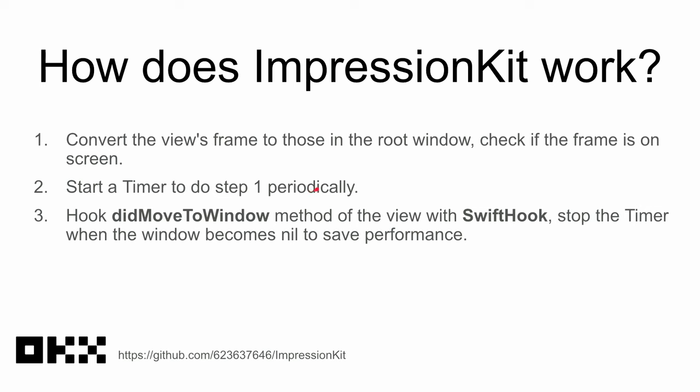How does ImpressionKit work? First, we convert the view's frame to coordinates in the root window and check whether the frame is on screen. Then we start a timer to do this check periodically, so we know how long the view has been on screen. Third, we hook `didMoveToWindow` using SwiftHook to stop the timer when the window becomes nil, to save performance — because step one requires calling UIKit APIs on the main thread, we need to stop the timer in certain cases.